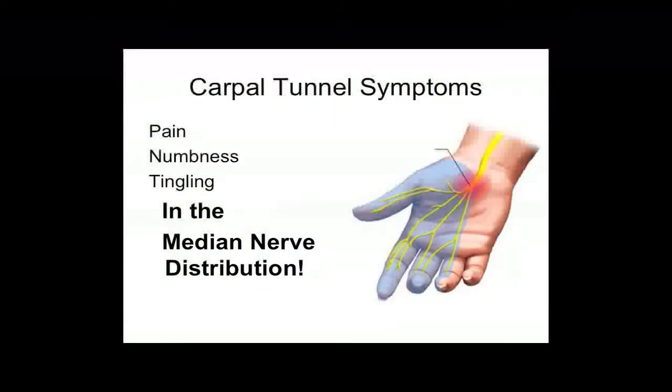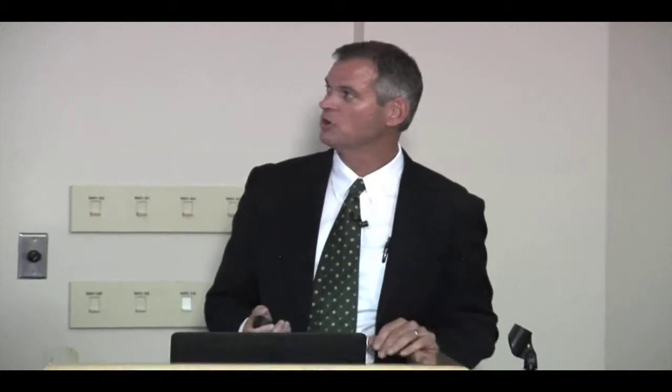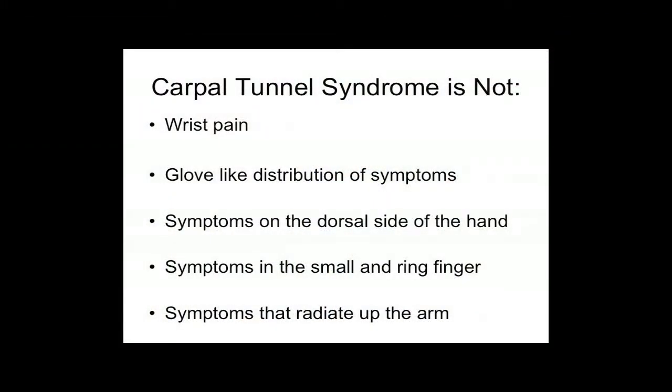In carpal tunnel syndrome, pressure on the median nerve causes nerve malfunction in the median nerve distribution — the palmar side of the thumb, index, middle finger, and the thumb side of the ring finger. Carpal tunnel is typically not wrist pain; it's numbness and tingling. People with wrist pain may have wrist arthritis. Glove-like distribution affecting all five fingers is more likely peripheral neuropathy. Symptoms on the dorsal hand suggest radial innervation; small and ring finger symptoms suggest ulnar distribution. Symptoms radiating up the arm suggest cervical radiculopathy or thoracic outlet syndrome.